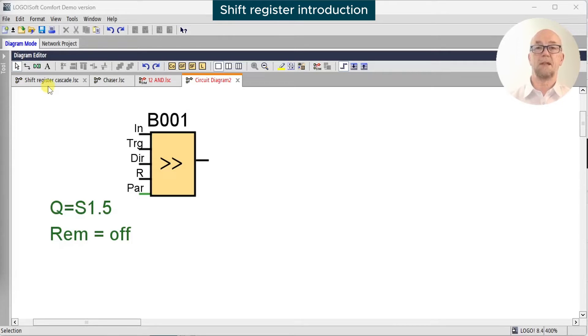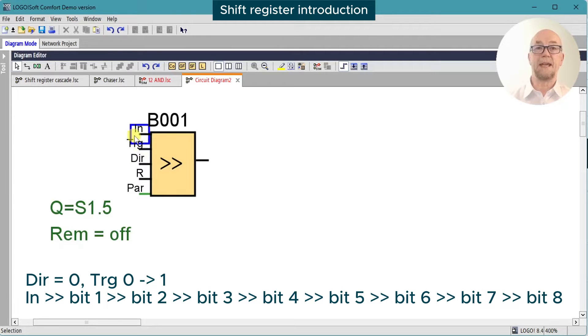The easiest way to understand the shift register is to watch it in action. Before we do, let's examine the inputs and outputs. Every time the trigger input goes from low to high, the data in the 8 bits of the shift register are shifted right, and the data on the in pin is loaded into the first position.